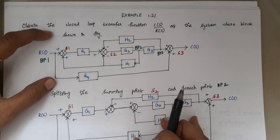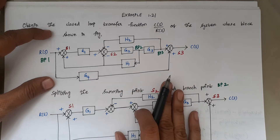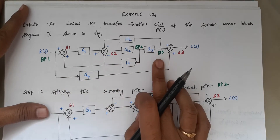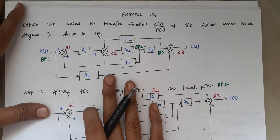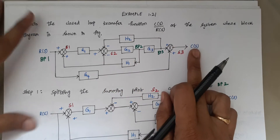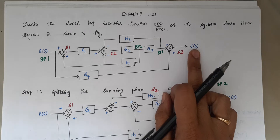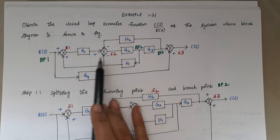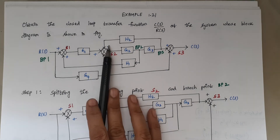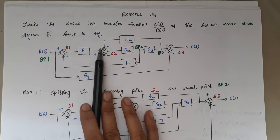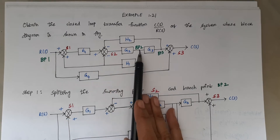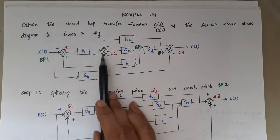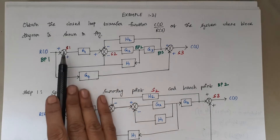This problem consists of three summing points S1, S2, S3, and three branch points 1, 2, and 3. We are asked to find the transfer function C(S)/R(S). The first step is splitting the summing point S2, because S2 has three inputs — plus, minus, minus. We are also going to split branch point 2, because it connects with both S2 and S1.